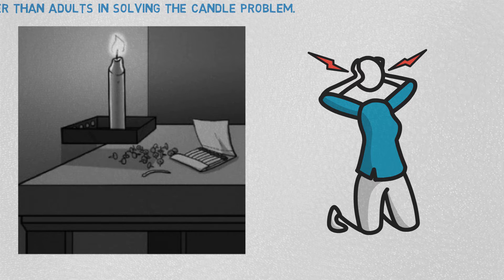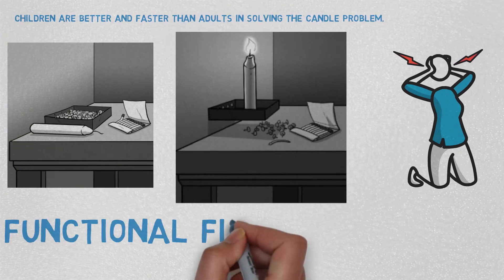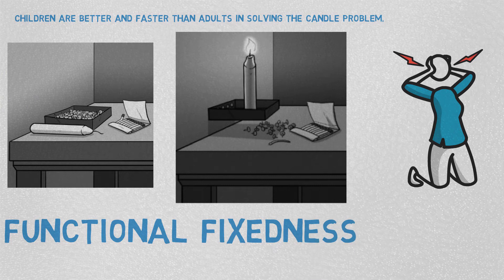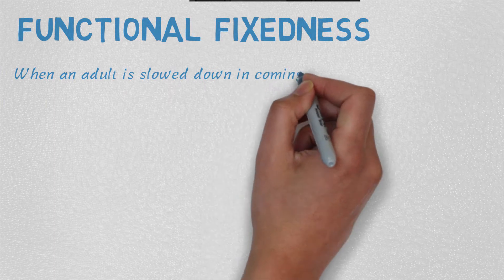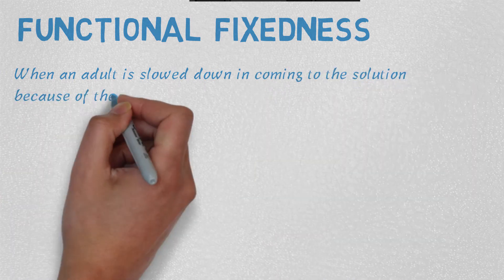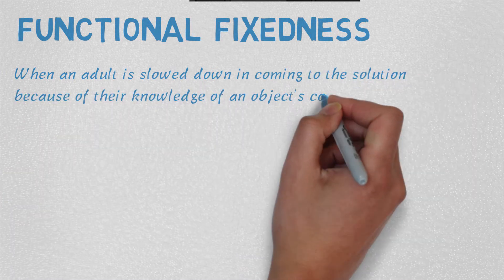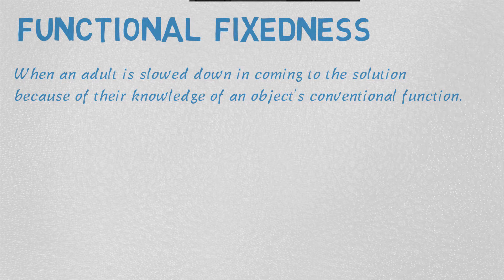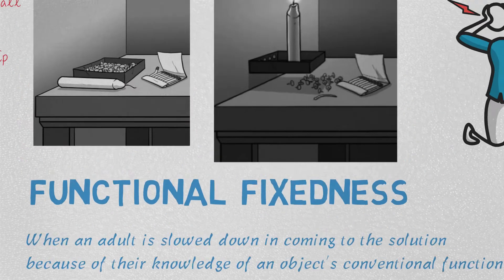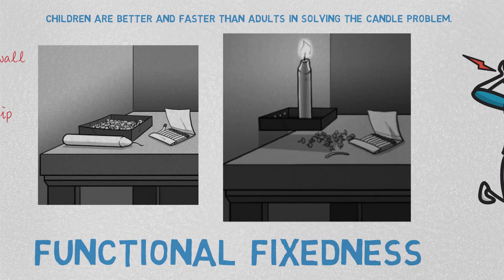Functional fixedness is when an adult is slowed down in coming to a solution because of their knowledge of an object's conventional function. We develop intuitions about function from our past experience of problem solving, and we just fail to see alternate functions. You look at the box and see only one function as a container for the tacks.